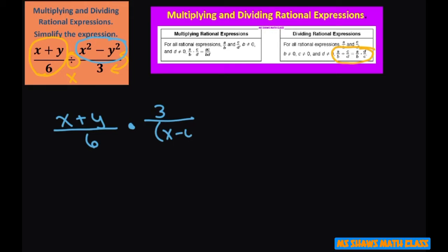x minus y times x plus y. Now from here we can simplify by dividing out. So x plus y divided by x plus y is just 1. Three goes into six two times, that's a 1.